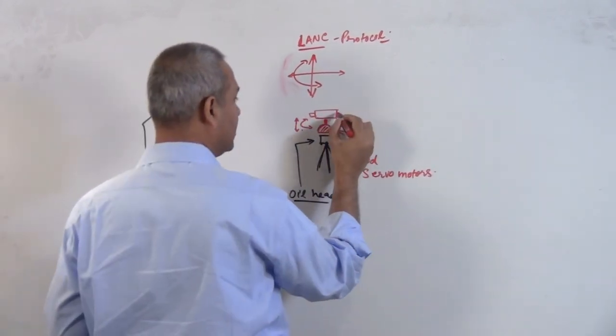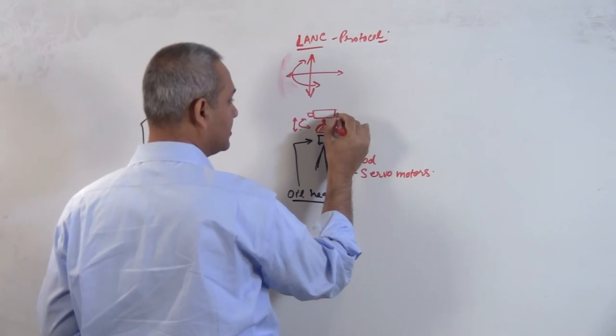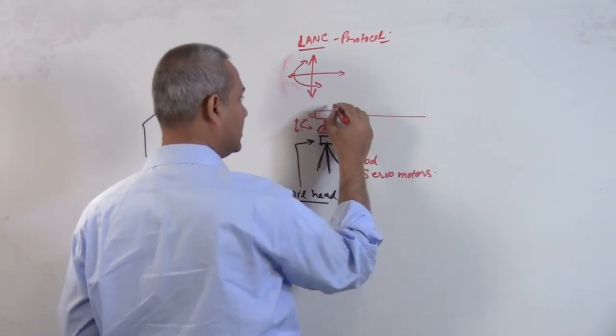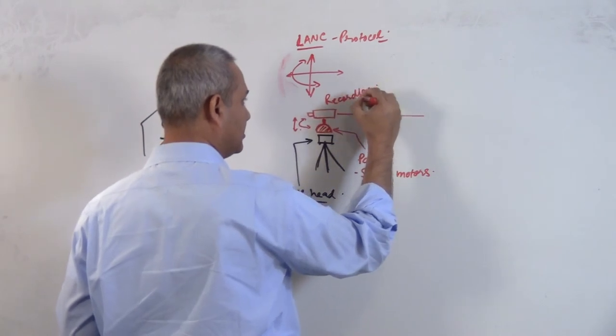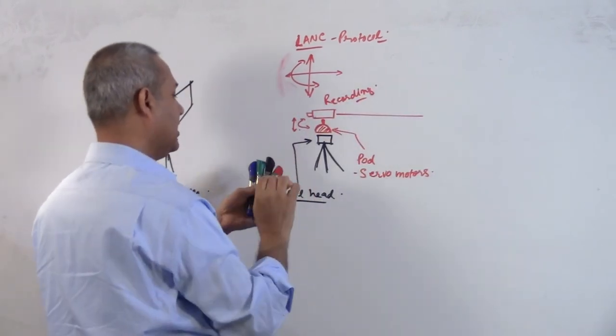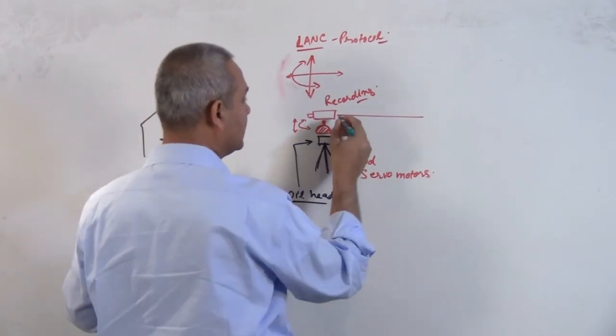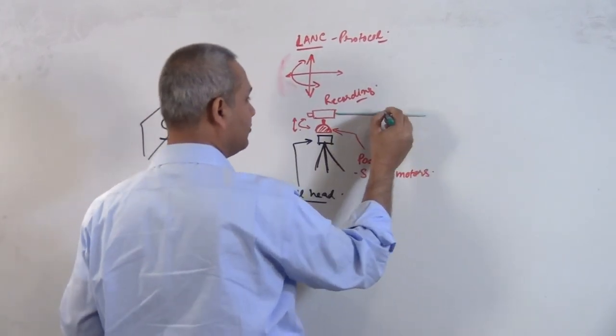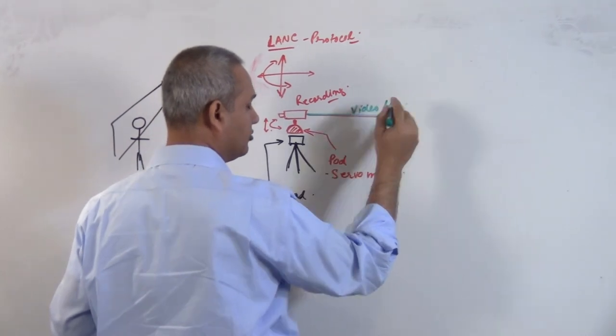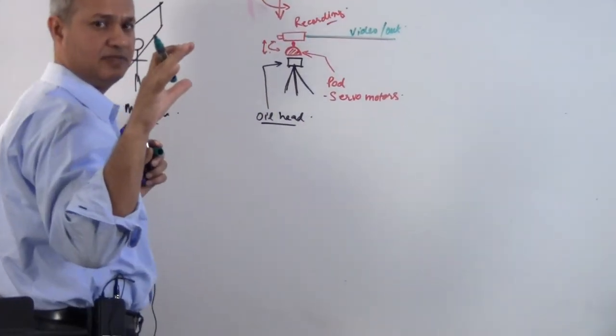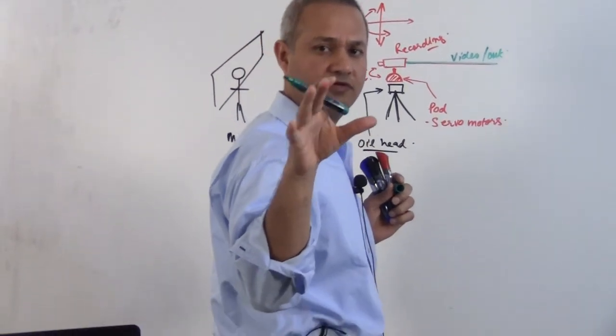The camera's output is taken. Number one, the camera is doing recording here. The output is taken through the video out because that is the only output I have. The camera's range is about six, seven hundred dollars, so not a very expensive camera.